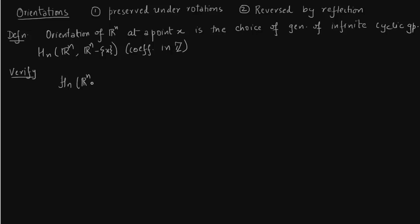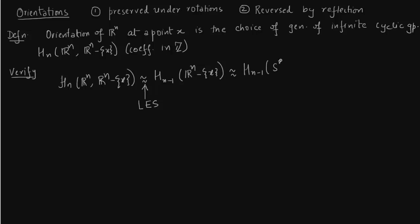First we notice the following isomorphisms. The first isomorphism comes from the long exact sequence of the pair (Rⁿ, Rⁿ \ x) — this was also used in proving Rᵐ is not equal to Rⁿ for m ≠ n. The second one comes from a deformation retract, and since we have reduced everything to the sphere, things should be easy now.